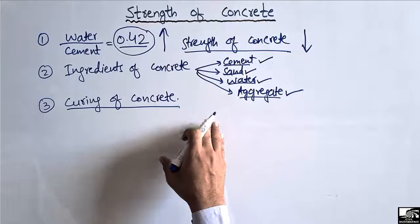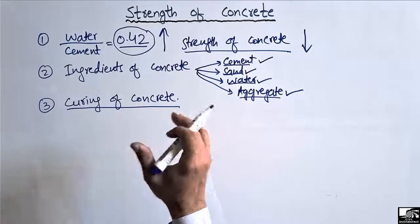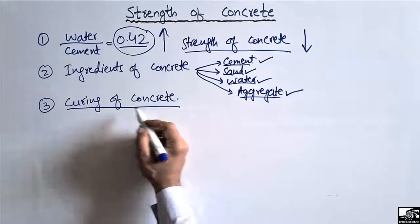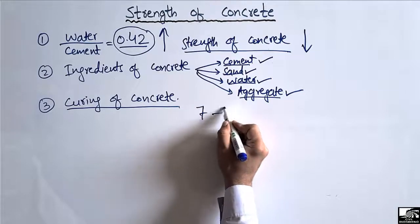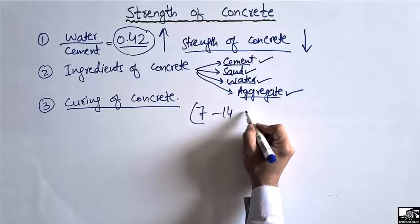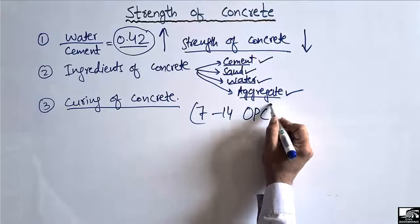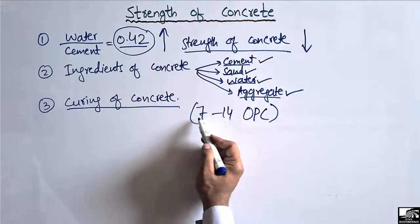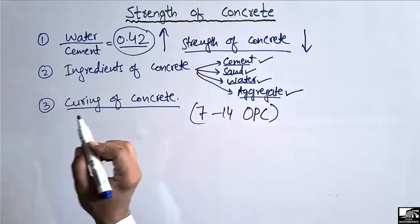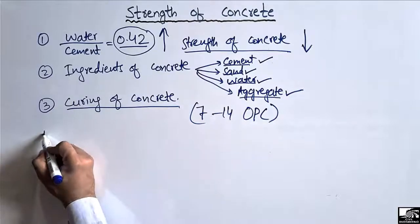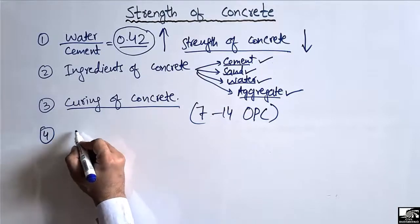Curing also provides sufficient water to the concrete for completing the hydration process. The general range for curing of concrete when using ordinary Portland cement is 7 to 14 days.